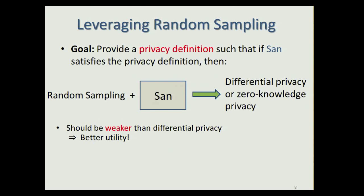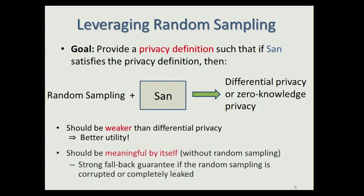This definition should be weaker than differential privacy because we want better utility. Furthermore, we want the definition to be meaningful by itself, even without any random sampling. This is important because if the random sampling is completely corrupted or completely leaked, we still want the definition to provide a strong fallback guarantee.